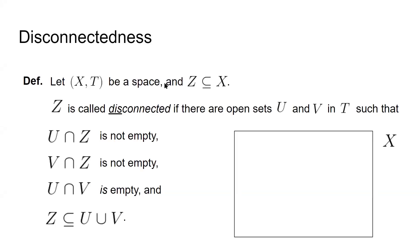Let's talk about connectedness. Connectedness is exactly the property of not having to take your pen off the page — the property we really mean when talking about continuity of real functions. It's easier to define disconnectedness first. Given a space X with topology T and a subset Z, Z is called disconnected if there are open sets U and V in T such that U intersect Z is non-empty, V intersect Z is non-empty, U intersect V is empty, and Z is a subset of the union of U and V.